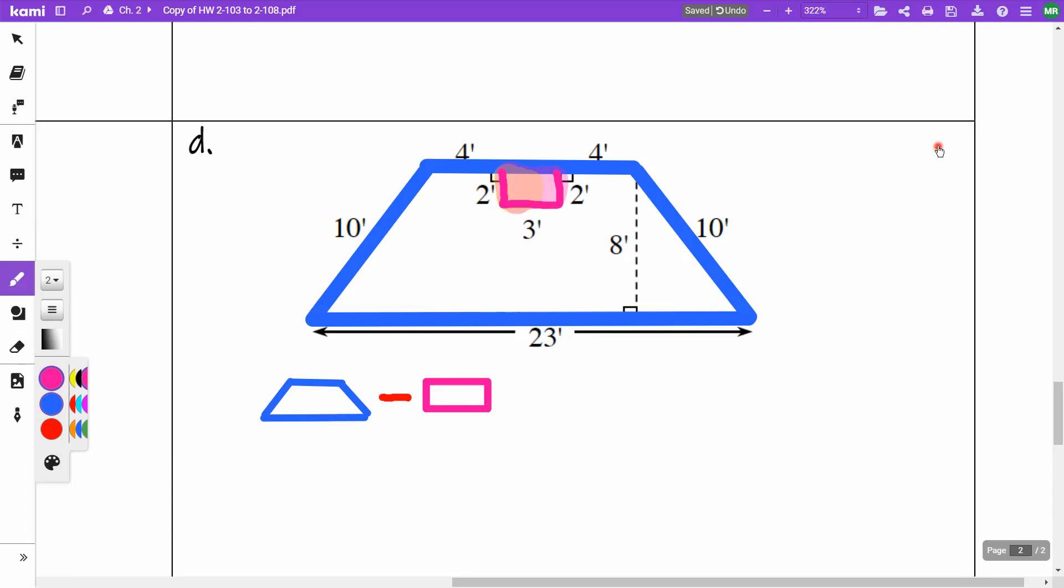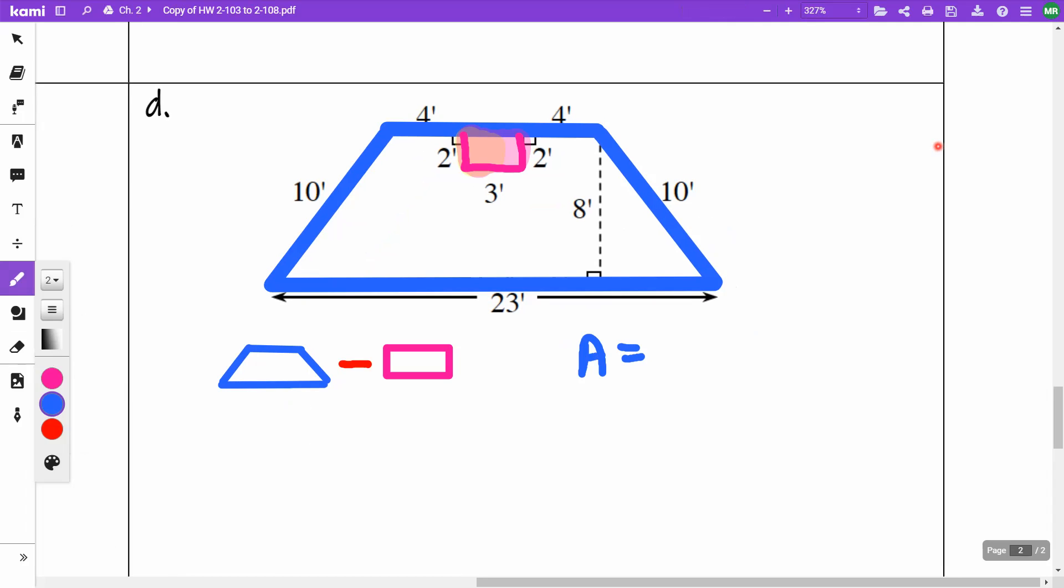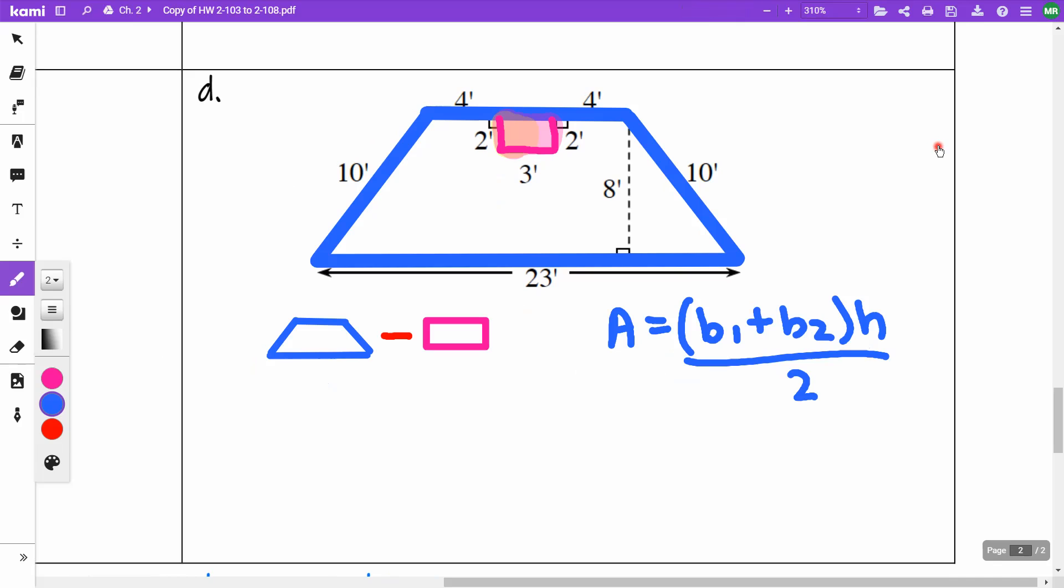The area of my trapezoid, the formula for the trapezoid is going to be base 1 plus base 2 added up times the height divided by 2. So going across the top here, I've got my 4 plus I have my 3 plus I have my 4, so that is going to be 11 plus going across the bottom I have my 23. And then my height is this perpendicular 8 divided by 2. So when I do that math, 11 plus 23, I get 34 times 8 divided by 2, I get 136.